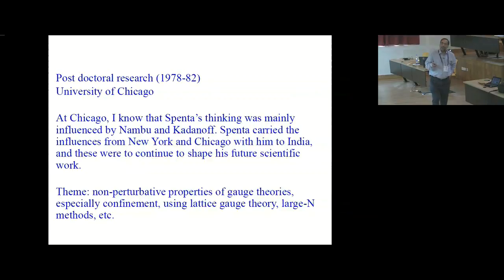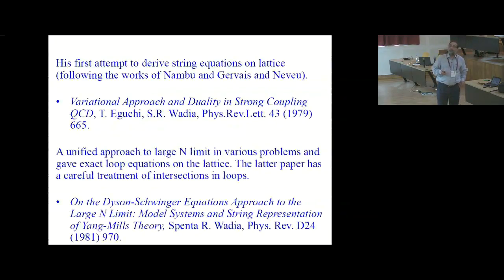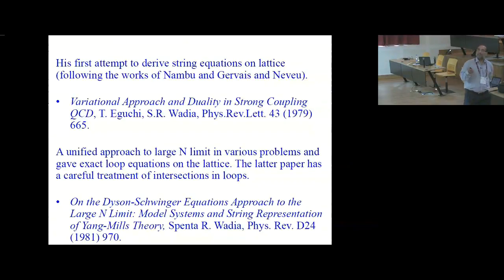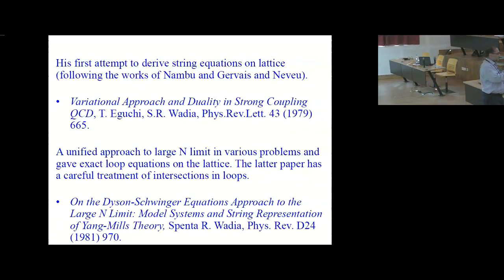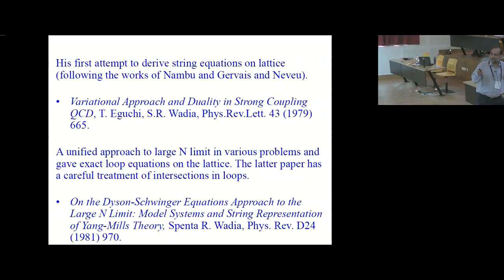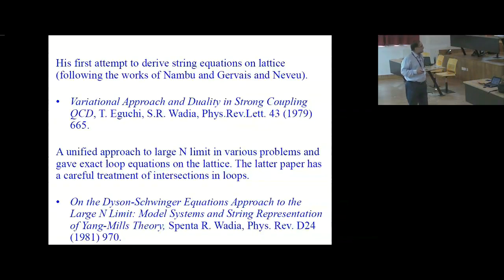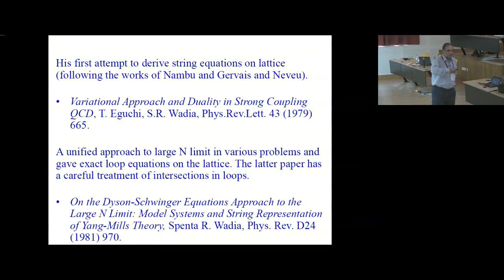I have picked up a few papers from this period that I think are very important. The first indicates that confinement was something Spenta had started thinking about very seriously. This is the work with Eguchi on a variational approach and duality in strong coupling. What they do is think of mesons as made up of a quark-antiquark pair with a string stretched between them. On a lattice, they look at all possible strings stretching between these mesons and write down a variational wave function, then minimize energy to write down a string-like equation for the amplitudes of each flux string.